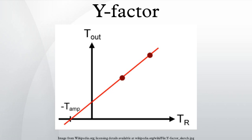The noise power at the output of the amplifier is POUT equals G kB times TR plus TAMP times B, where G is the amplifier power gain and TAMP is the amplifier noise temperature.